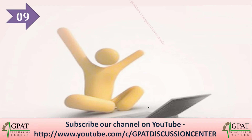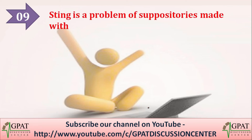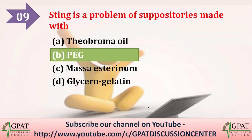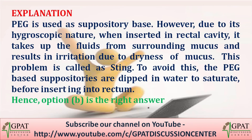Next question: stinging is a problem of suppository made with — option A is theobroma oil, option B is PEG, option C is Massa Estarinum, option D is glycerogelatin. Stinging is a problem of suppository made with PEG, which is used as a suppository base.